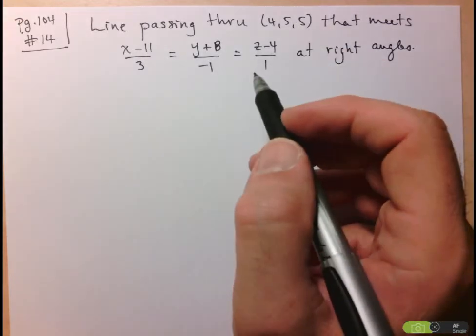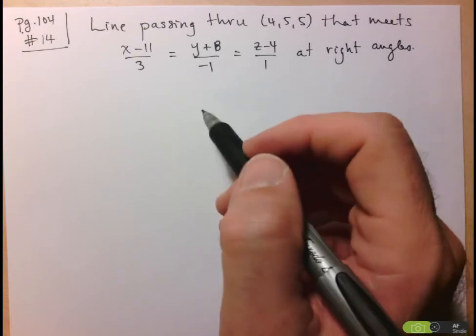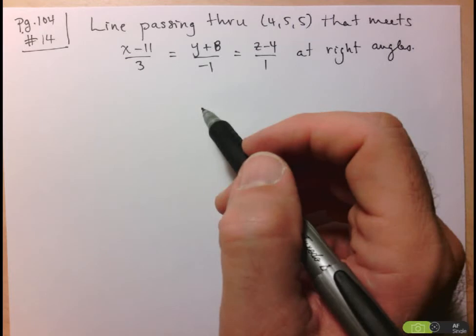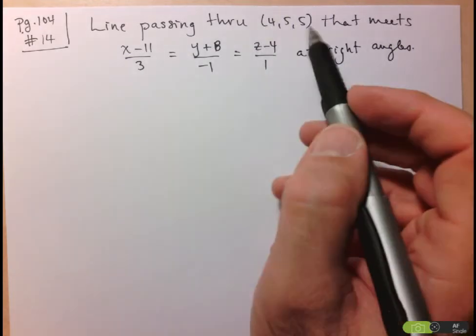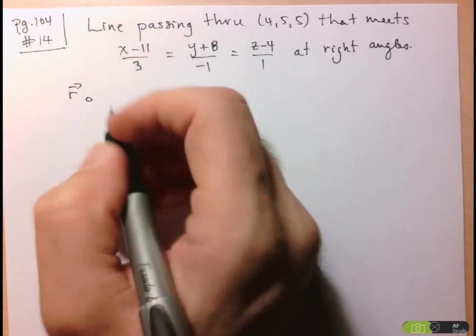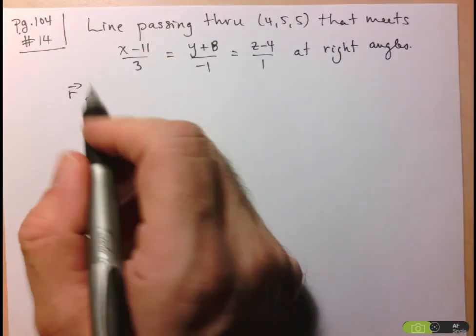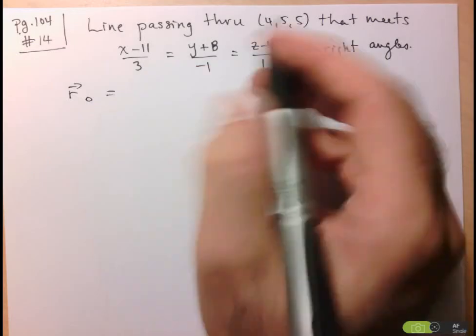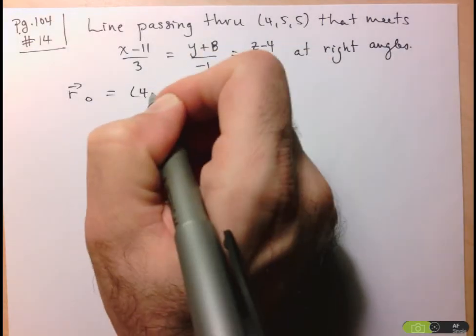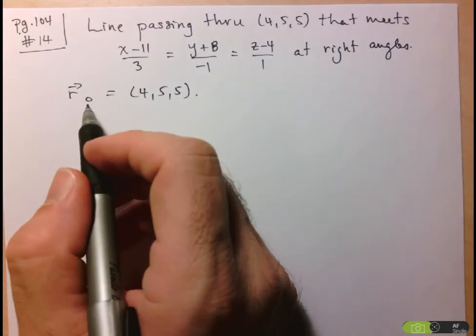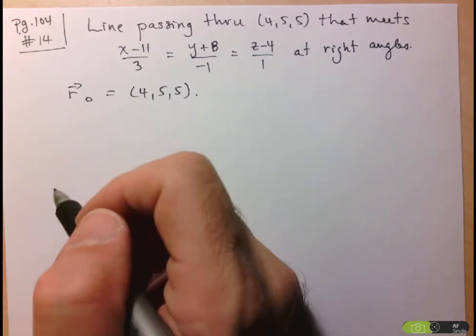To find a line — in this case I'll find it in vector and parametric form — we need a point on the line and a direction vector. The line passes through (4,5,5), so we already have our point, denoted R-naught, which represents the vector from the origin to (4,5,5).